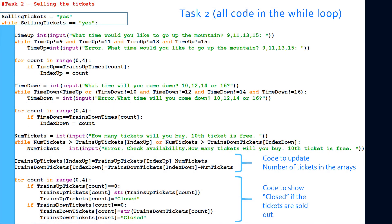Here is task 2. The first line of task 2 is a flag called selling_tickets. It's initialized to yes, so selling_tickets equals yes. While selling_tickets is equal to yes, all the code of task 2 is inside this while loop, under these two lines of code: selling_tickets equals yes, while selling_tickets equals yes.